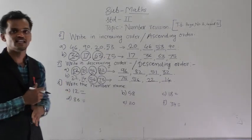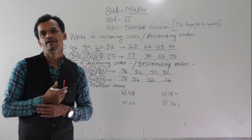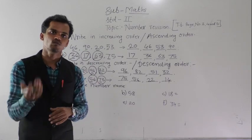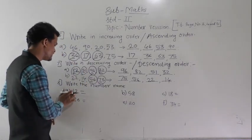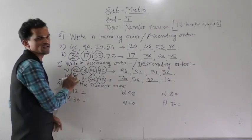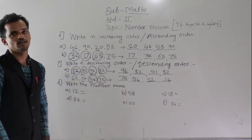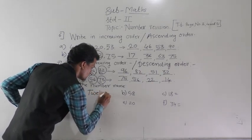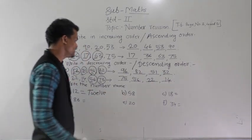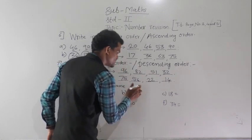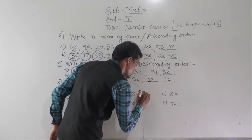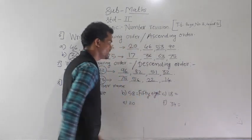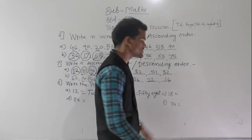Numbers are given in numeral form and we have to write the name of the number in words. For example: 1 ten and 2 ones forms the number 12. Then 5 tens and 8 ones means 58. Then 1 ten and 8 ones means 18. Then 8 tens and 6 ones means 86.